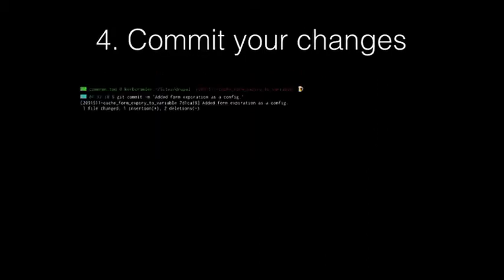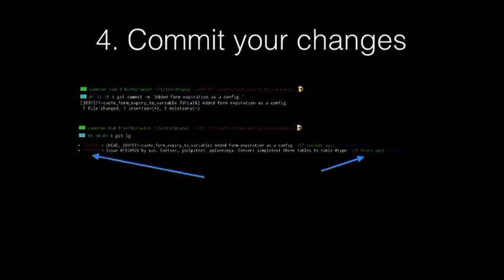Now let's commit it. The command is git commit with the minus m argument, which means message. You want to put in a simple message that reads clearly on one line — this is the convention, and it's a good mental discipline. If I need four lines to describe what I'm changing, my commit is probably too big. When I run the commit, I get a message saying one file changed, one line inserted, and two deleted. If I run git log, I can see a commit from Dries on Drupal.org, and then my commit sits on top of that — about 21 hours between his commit and mine.